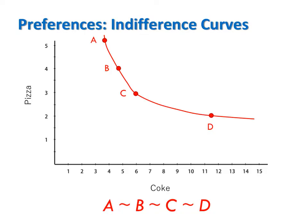Usually, when we draw indifference curves, they have two defining characteristics: downward sloping and convex to the origin. I will discuss what convexity means at the end of this video. For now, let me focus on downward sloping. An indifference curve slopes down when we assume monotonicity or non-satiation holds — that is, if more is better for each good, then indifference curves have to slope down.